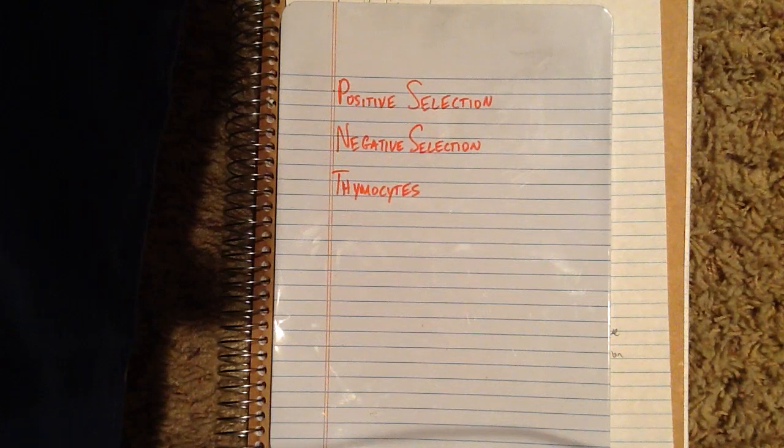My name is Caleb Dunn, and today we're going to talk about positive and negative selection of thymocytes.